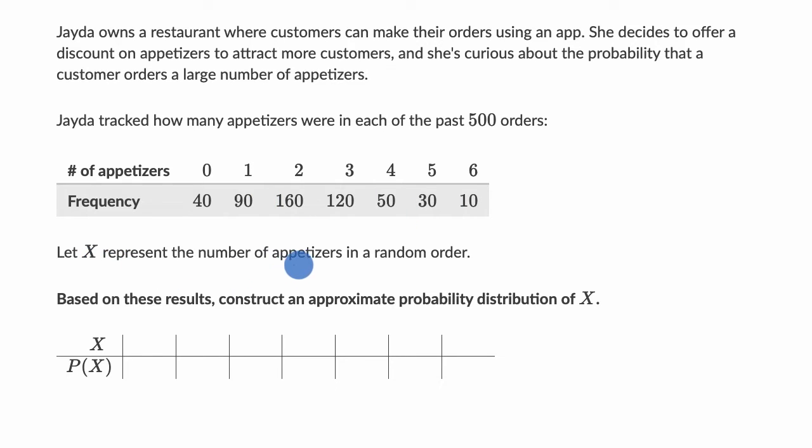Let X represent the number of appetizers in a random order. Based on these results, construct an approximate probability distribution of X. Pause this video and see if you can have a go at this before we do this together.